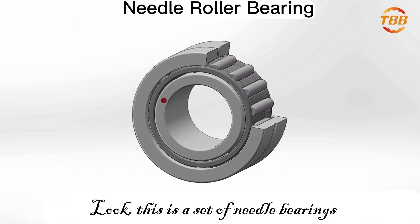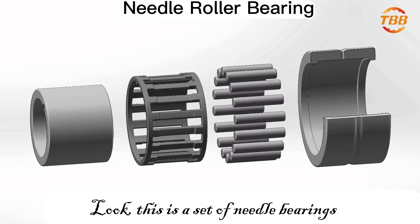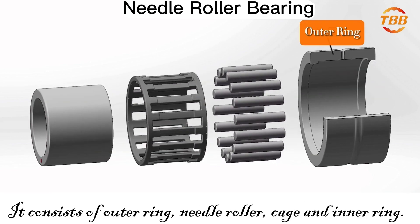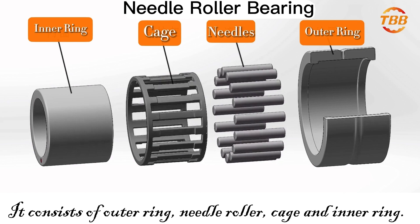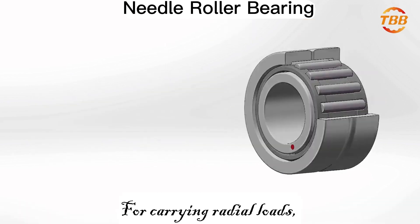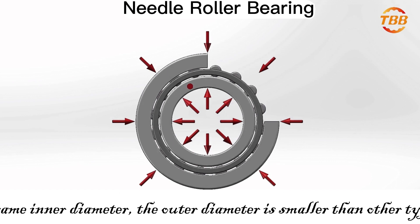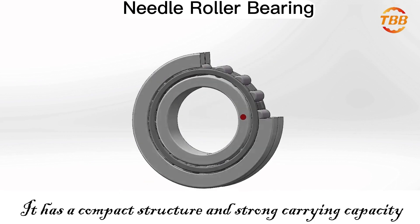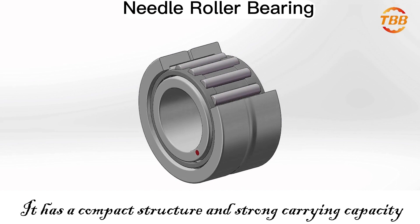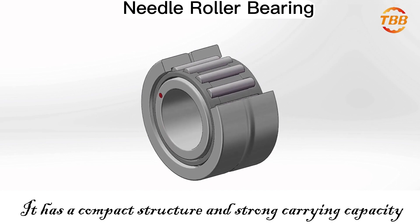This is a set of needle bearings. It consists of outer ring, needle roller, cage, and inner ring. For carrying radial loads, with the same inner diameter, the outer diameter is smaller than other types of bearings. It has a compact structure and strong carrying capacity.